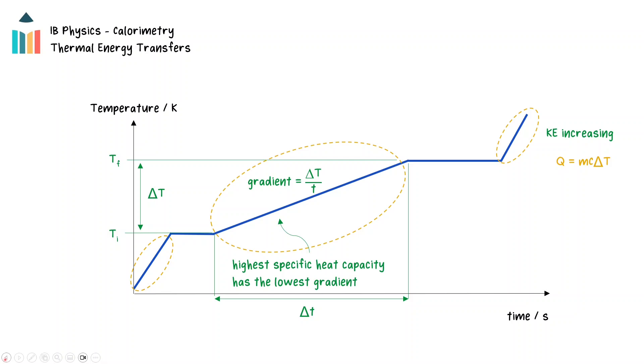Notice that the gradients of the sections on the graph relating to the solid, liquid, and gas phases all have different slopes because the specific heat capacities of the different phases vary.